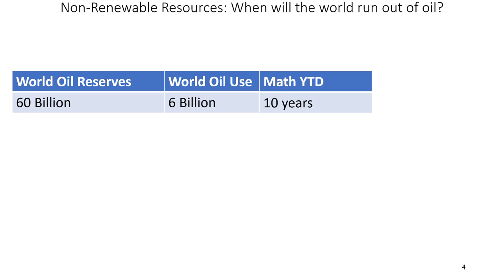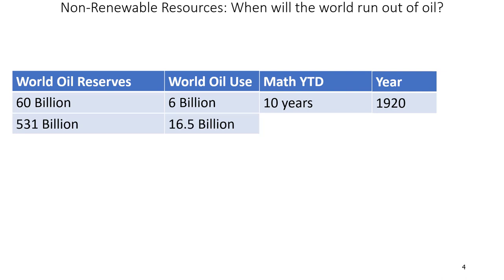I told you this is real data from the federal government, but I didn't tell you what year this data was from — this is real data from the year 1920. So according to this data, we should have run out of oil by the year 1930, but of course we didn't. More updated numbers reveal that the world's oil reserves are 531 billion barrels, and the world uses 16.5 billion barrels per year. If you do that math, the world should run out of oil in 32 years. But again, this is data from the year 1970, so by 2002 we should have run out — and of course we haven't.